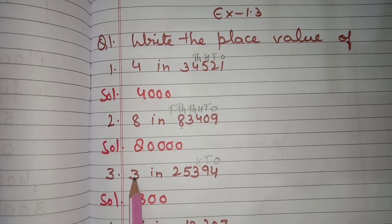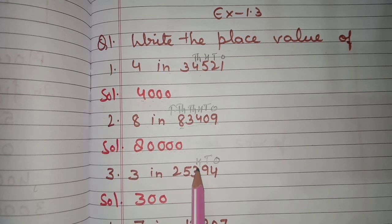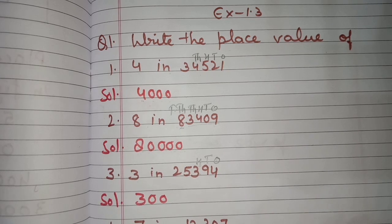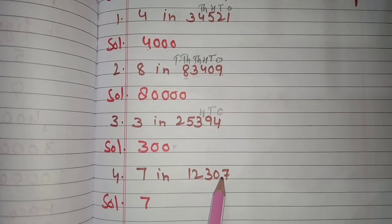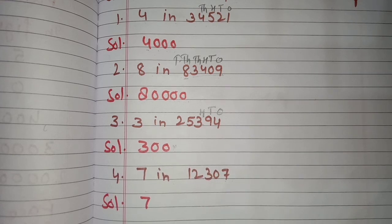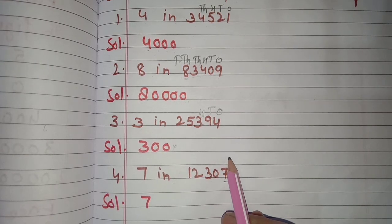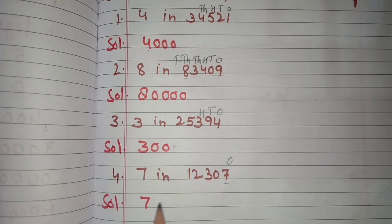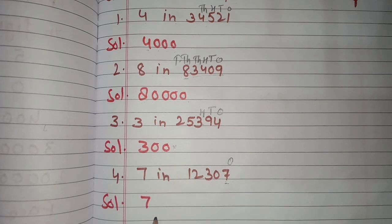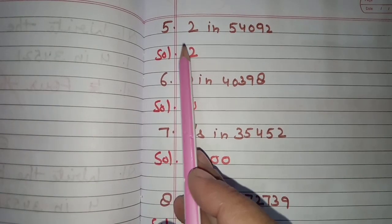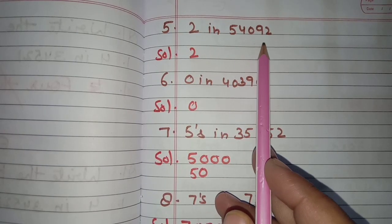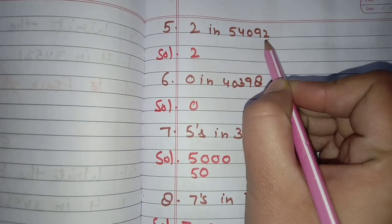The place value of 3 is hundreds, so we write 300. Next: 7 in 12,307 — twelve thousand three hundred and seven. Here 7 is at the ones place, so its place value is 7. Next is 2 in 54,092 — here 2 is at the ones place, so its place value is 2.